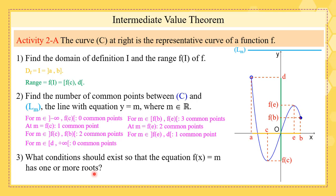What conditions should exist so that the equation f(x) = m has one or more roots? f should be continuous, and m should belong to f(I) — the range. If m belongs to f(I), somewhere on the green segment f(x) = m has one or more roots. Otherwise, if m doesn't belong to the range, the line Lm doesn't cut the curve.